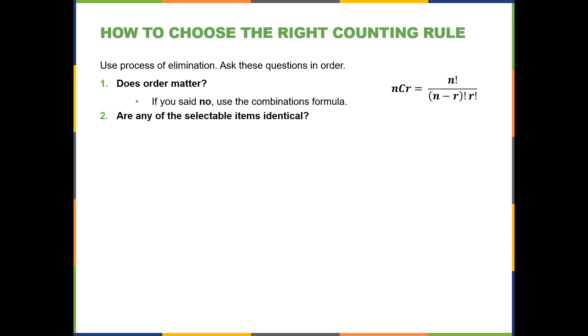Are any of the selectable items identical? So you'll have a certain number of items that you're going to either select from or rearrange in some way, and whatever those items are, if any of them are identical, let's say you have the letters of the word Mississippi, you have several S's that are identical, some I's that are identical, some P's that are identical, so you would then want to use the permutations formula for permutations with some identical items, where the top of it is the total number of items available, and the little n's down in the bottom represent the number of each repeated item.